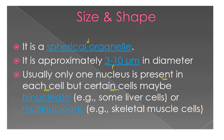Certain cells are exceptions: some liver cells are binucleated, meaning they have two nuclei. Skeletal muscle cells are multinucleated, having more than one nucleus. Red blood cells (RBC) have no nucleus at all — remember that.